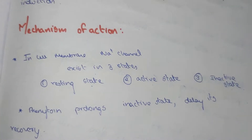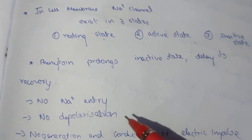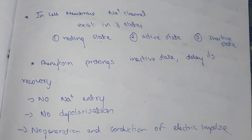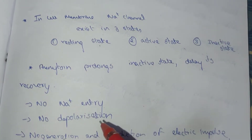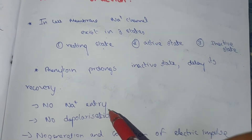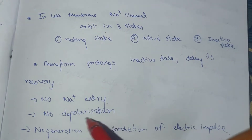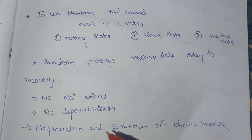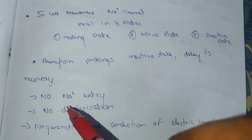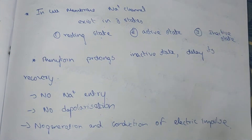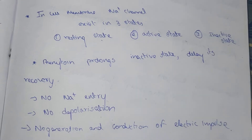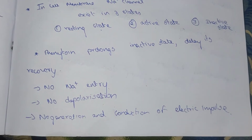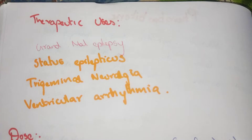Because the inactive state is prolonged, there is a delay in recovery, so there is no entry of Na+ into the cells and no depolarization. When Na+ enters it normally causes depolarization used in nerve impulse conduction, but here there is no Na+ entry, resulting in no depolarization, no nerve conduction, and no generation of impulses. This is the mechanism of action of phenytoin sodium.